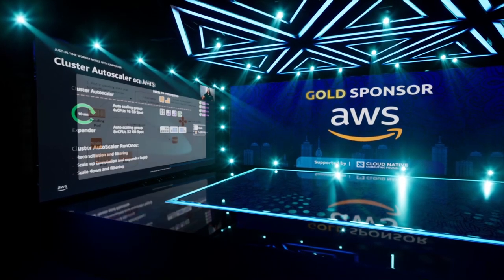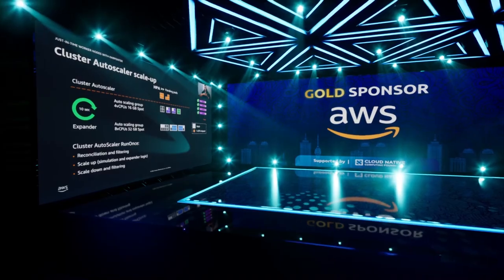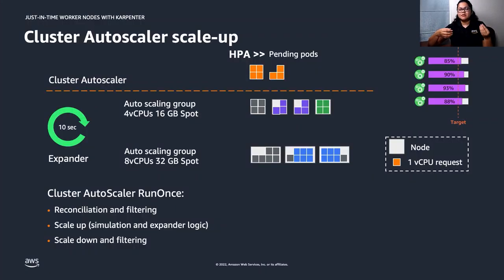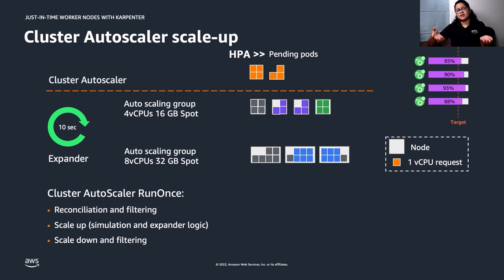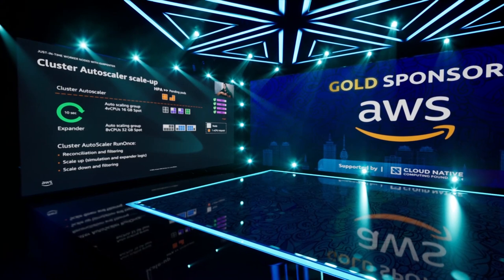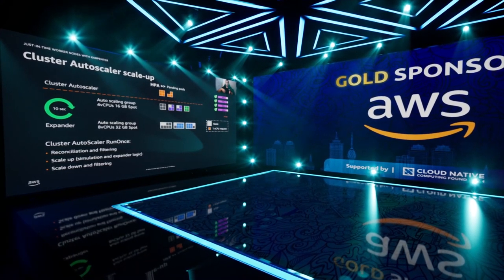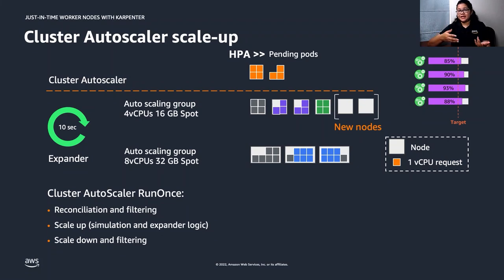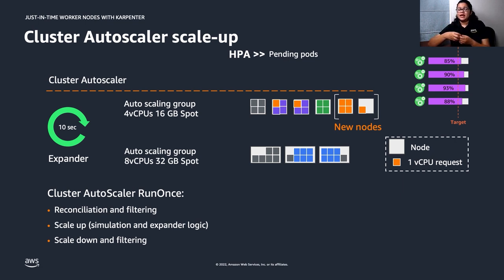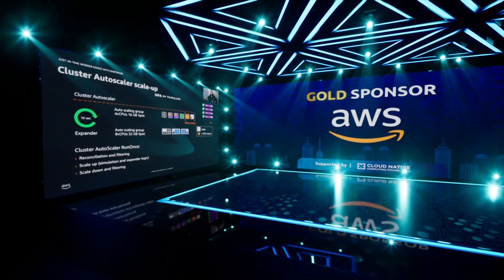The Cluster Autoscaler works with HPA. The Horizontal Pod Autoscaler changes the number of replicas based on current CPU workload. If CPU load increases, HPA creates new replicas for which there may or may not be enough space in your cluster. If there are not enough resources, the Cluster Autoscaler brings up nodes so that the HPA-created pods have a place to run. If load decreases, HPA stops some replicas, which may leave nodes underutilized or empty — and that's when Cluster Autoscaler terminates those unneeded nodes.